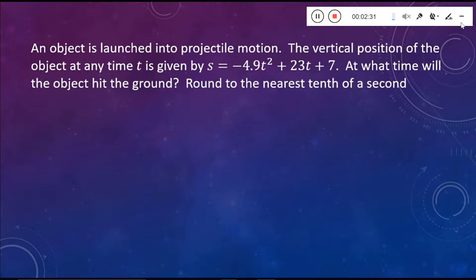So here's our first problem. An object is launched into projectile motion. The vertical position of the object at any time t is given by s equals negative 4.9 t squared plus 23 t plus 7. At what time will the object hit the ground? And we want to round our answer to the nearest tenth of a second.